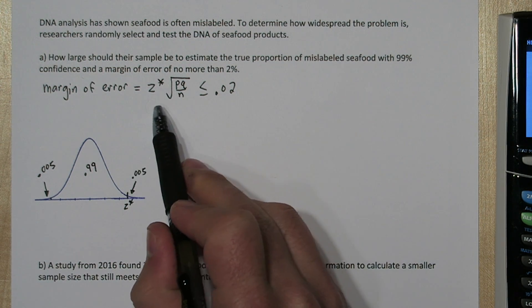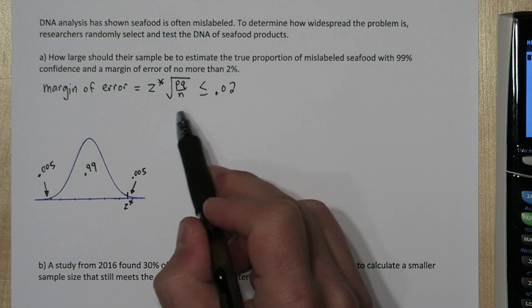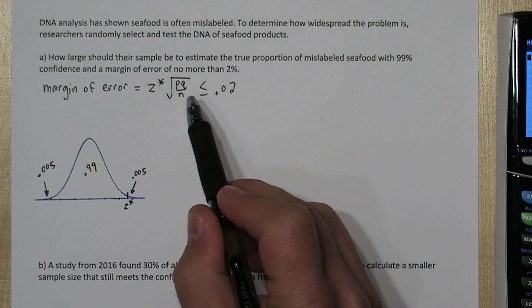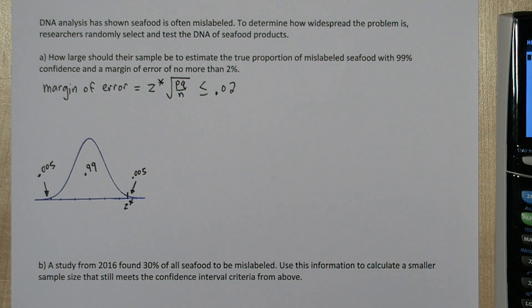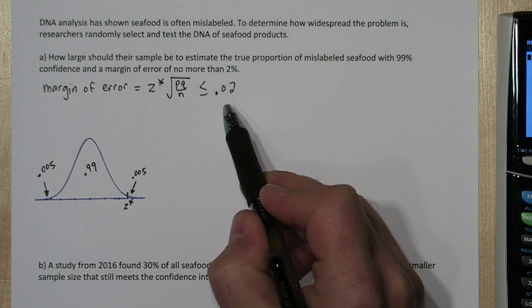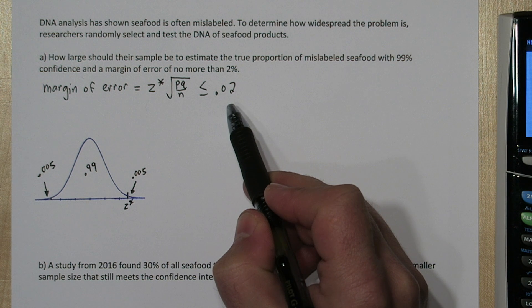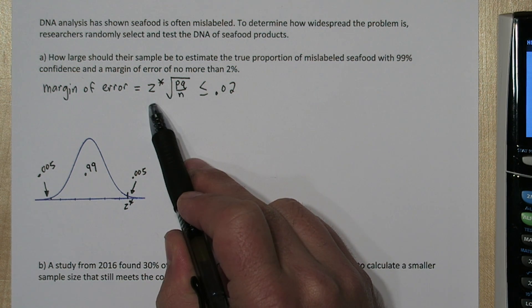Margin of error is z star, a critical value, times standard error, which is the square root of pq over n. And we need all of that to be less than 2%. So let's start by figuring out what z star is.